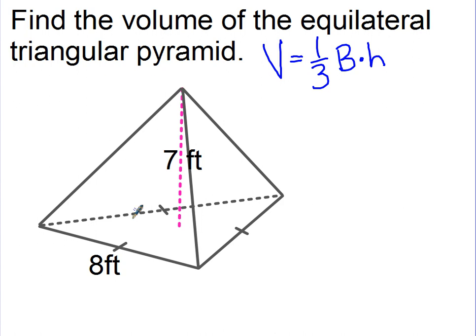So that means if we have an equilateral triangular pyramid, this bottom part is equilateral. It doesn't mean that all the faces are the same, but the bottom here, this triangle, is an equilateral triangle. That's going to help us with the area of the base.